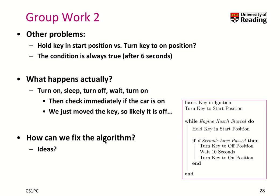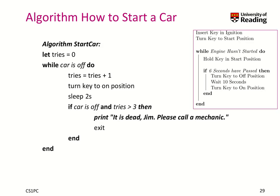Can we fix this algorithm? Here is one opportunity: algorithm 'start car' — we remember a number called 'tries', and as long as the car is off we increment tries, turn the key to an on position, wait two seconds, and then if the car is off and tries is bigger than three, we say 'please call a mechanic.' Otherwise we continue with the loop.